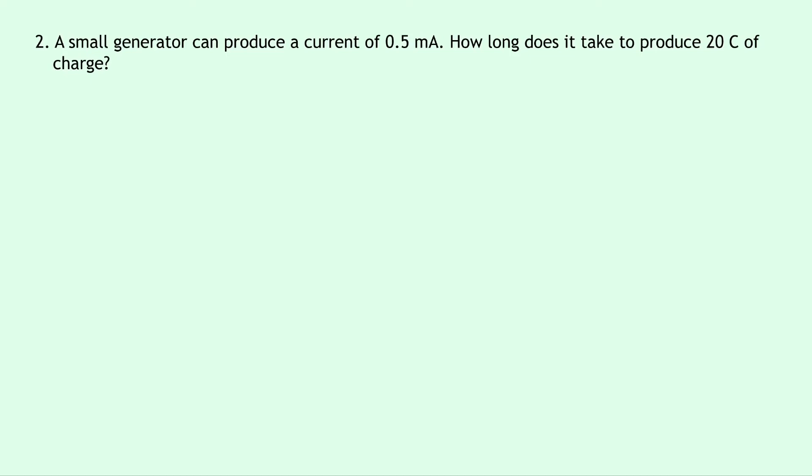Question two says that a small generator can produce a current of 0.5 milliamps. How long does it take to produce 20 coulombs of charge?